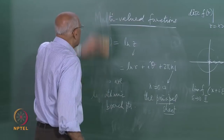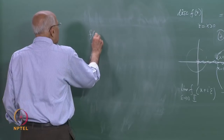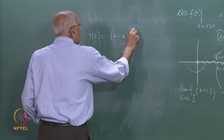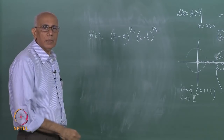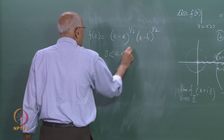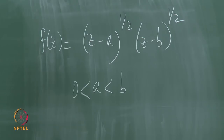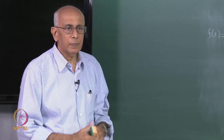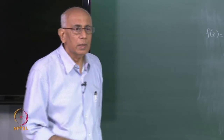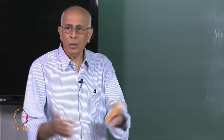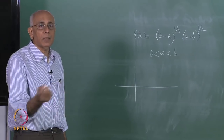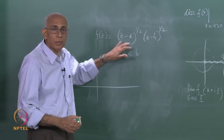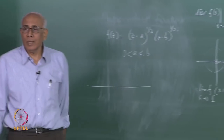What sort of singularities does this function have: f(z) = (z − a)^(1/2) · (z − b)^(1/2), where 0 < a < b are real positive constants? It clearly has square root branch points wherever each square root vanishes — at z = a and z = b. I am not even trying to construct the Riemann sheet, because you need a two-sheeted surface for each factor. But let us try to simplify the picture by drawing a single z plane and tracking phases.